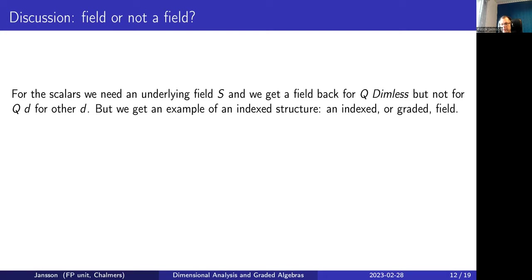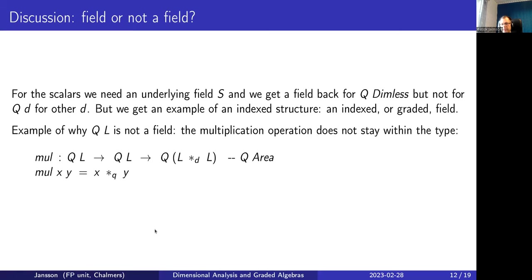With these operations, one asks: what does a graded field mean? Is this a field? If we have an underlying field S, we get a actual field for Q of Dimensionless, but not for Q of D for any other D, because multiplication is not closed — multiplying two length values gives an area, not a length, so you end up in a different index. You can recover a field structure by taking a pair type (dimension, Q of that dimension), but then you lose the dimensional tracking we actually want. Instead, it's a family of fields — for each index there is a field, and they interact through multiplication.